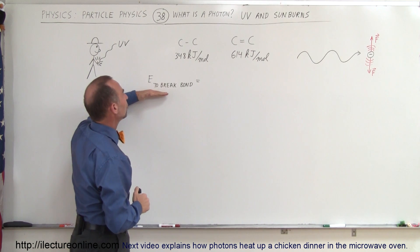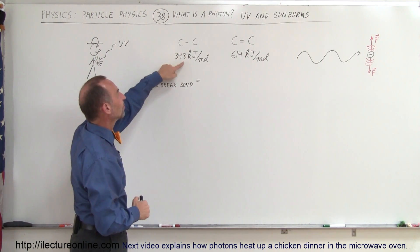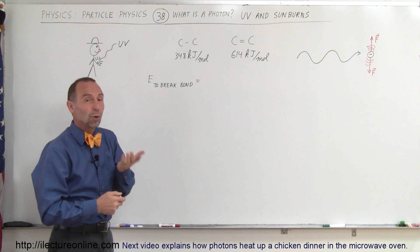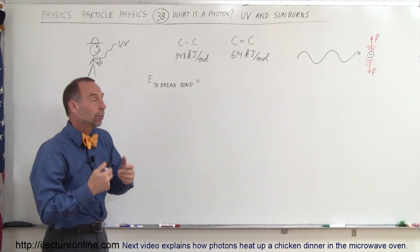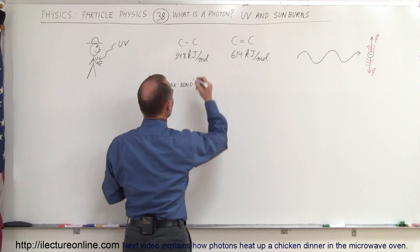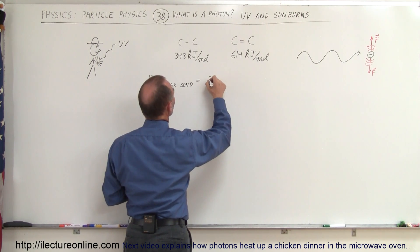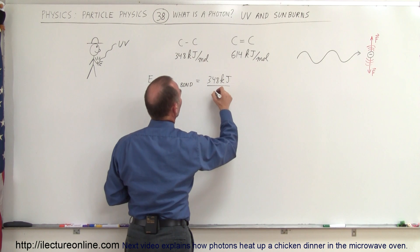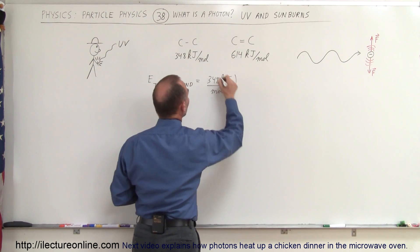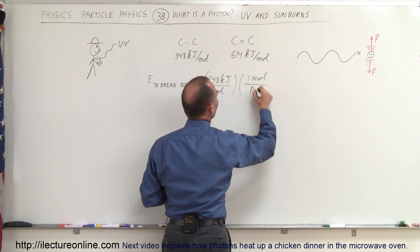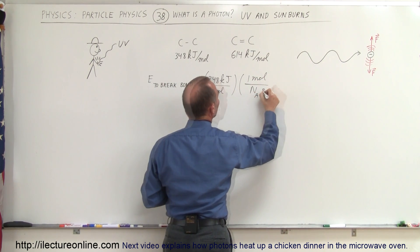Let's find out what the energy is to break a single bond if it's 348 kilojoules for a mole of bonds. A mole is Avogadro's number of bonds. So we take the energy — 348 kilojoules per mole — and multiply that times one mole divided by Avogadro's number of bonds.